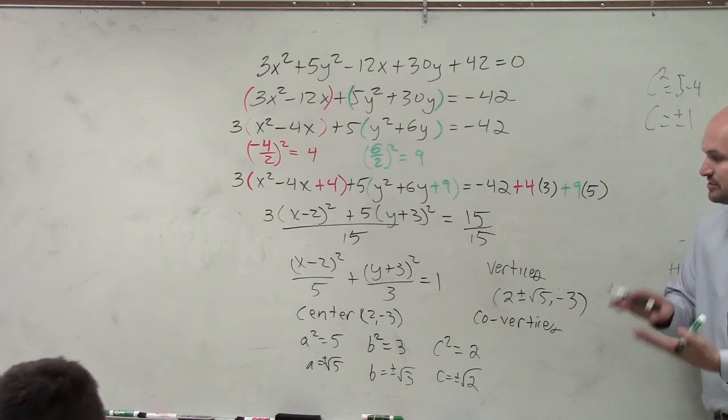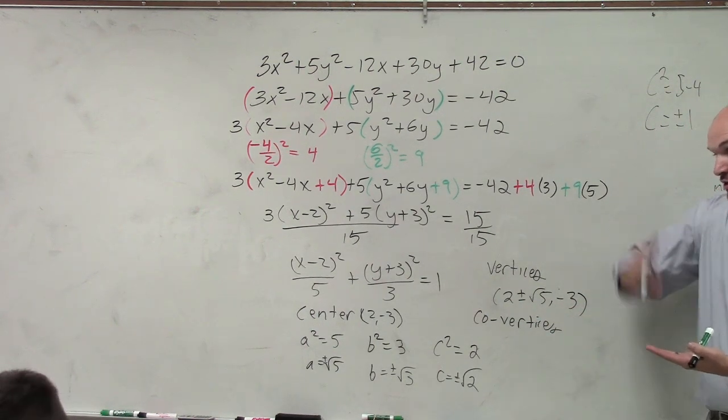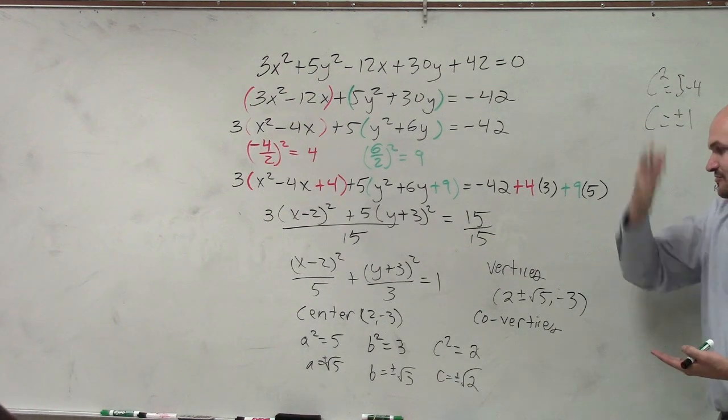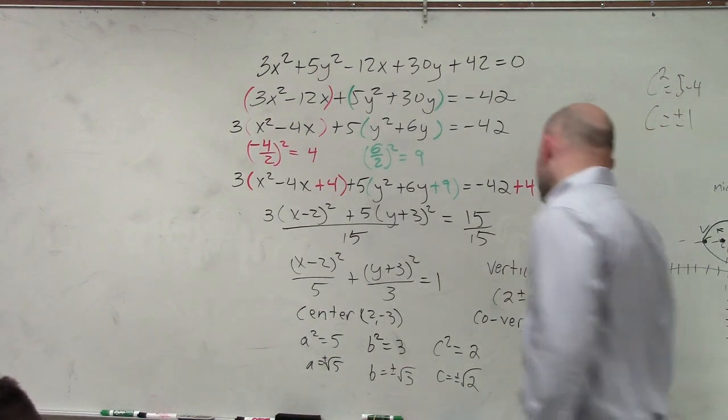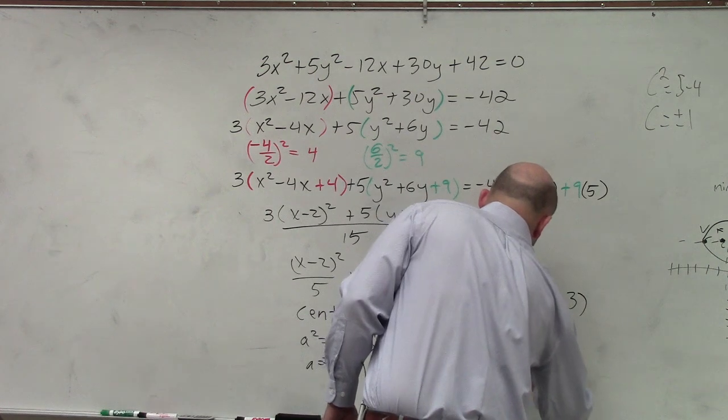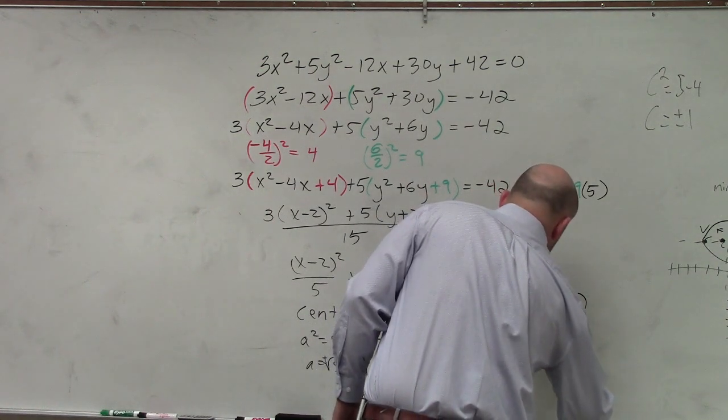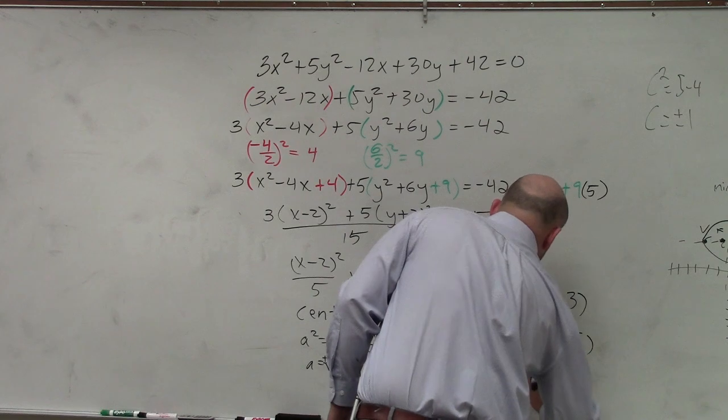My co-vertices, I'm going to do plus or minus, are going to be going up because my minor axis is vertical. So therefore, that's going to be 2, -3 plus or minus the square root of 3.